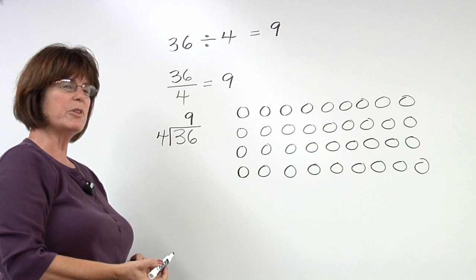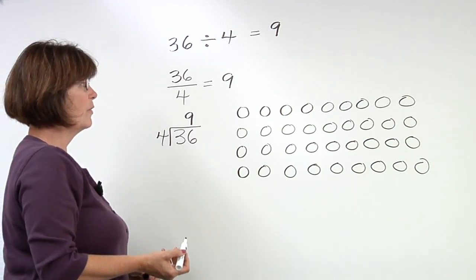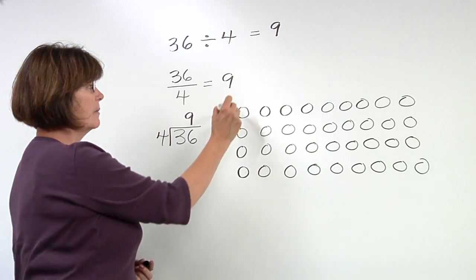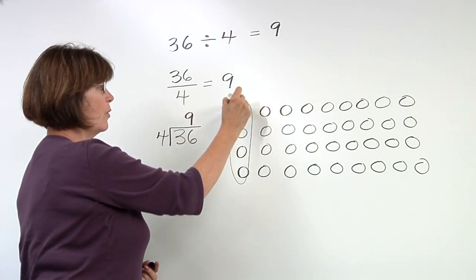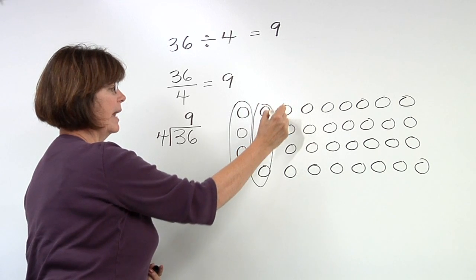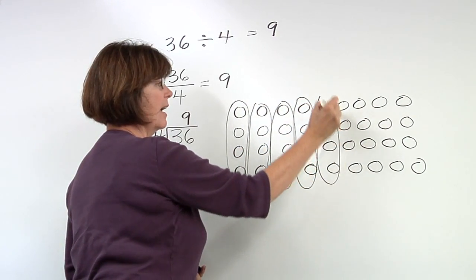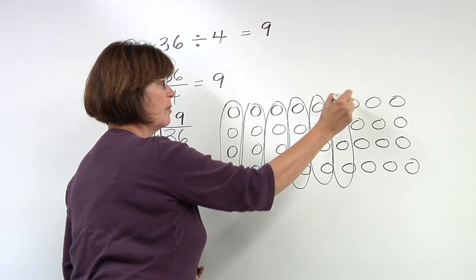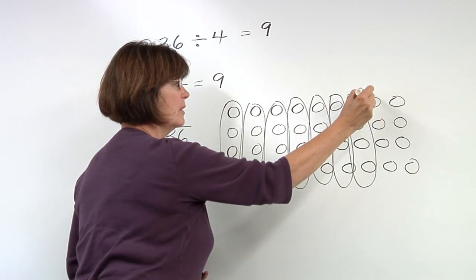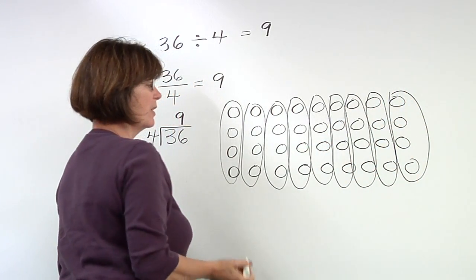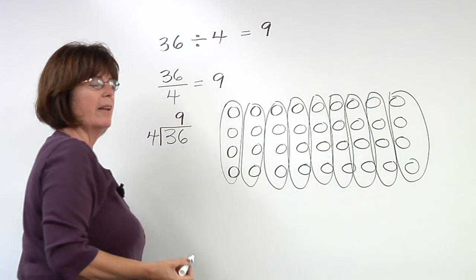If I have 36 objects, and the idea is to find out how many groups of 4 we can get, we're going to have 4 here and here. As you can see, you end up with 4 nine times. So the first number tells you the total amount. You're dividing it into groups of a particular amount, 4, and you get 9 of them.